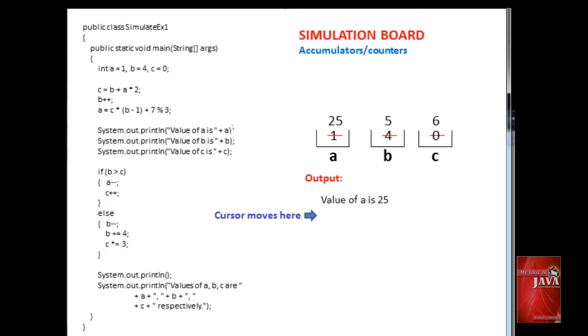The next three lines display the literal text enclosed in double quotes, concatenated with the values of a, b, and c.